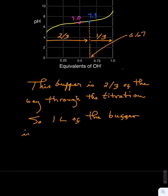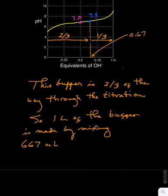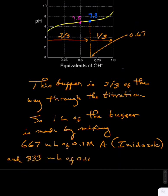So 1 liter of this buffer can be prepared by mixing 667 milliliters of 0.1 molar A, which is the imidazole base, and 333 milliliters of 0.1 molar HA+, which is the imidazoleum chloride solution.